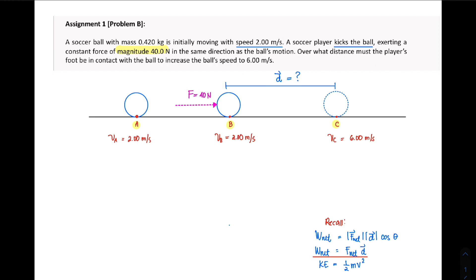Basically what the problem is asking is the distance - over what distance must the force act or must the player's foot be in contact with the ball so that it could have that given velocity of 6 meters per second?